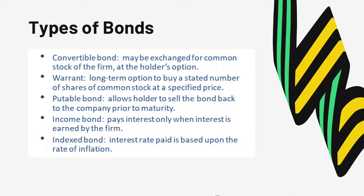Convertible bonds allow the holders of the bond to convert the bond into stock. A warrant is a long-term option to buy a certain number of common stock at a specific price. A puttable bond is a normal bond plus a put option, allowing bond holders to sell the bonds back to the company before it matures. Income bonds pay only interest. A rate-indexed bond has its coupon interest payment indexed to the rate of inflation, so bond holders earn more returns to compensate for purchasing power loss due to inflation.